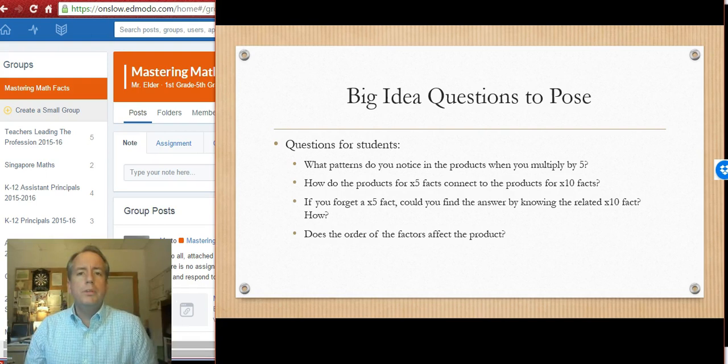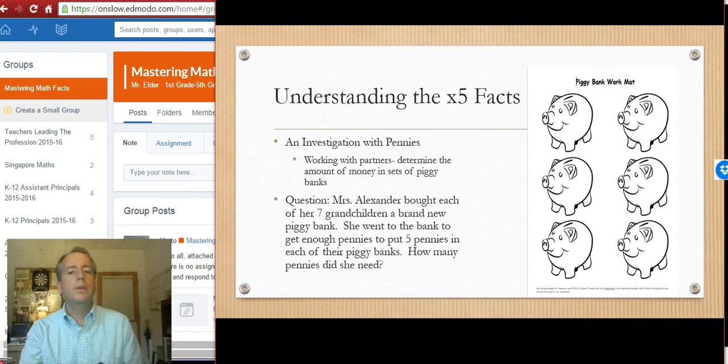Thinking about some questions, these may be some really good questions for around the room, for on a board, just as discussion questions as you go through. Kind of what patterns do you notice when you multiply by five? How do they connect between the fives and the tens? If I forgot a five fact, how could I use what I know about tens to solve that fact? And then, does the order of the factors affect the product? Of course, that goes right back to our big ideas. So let's get into a couple of the explorations, and then we'll hit our literature connection here.